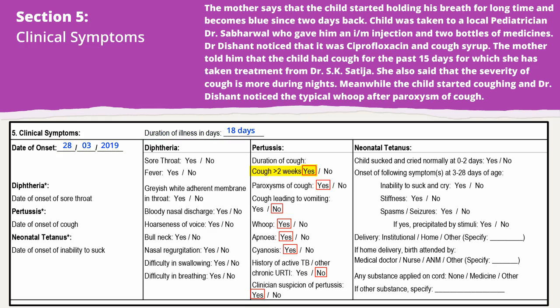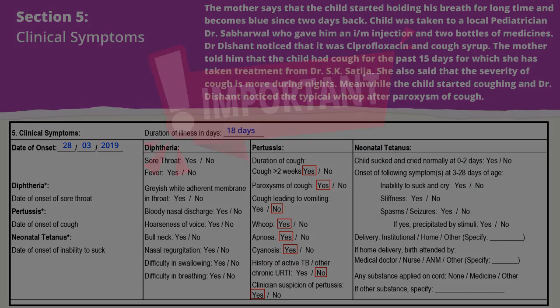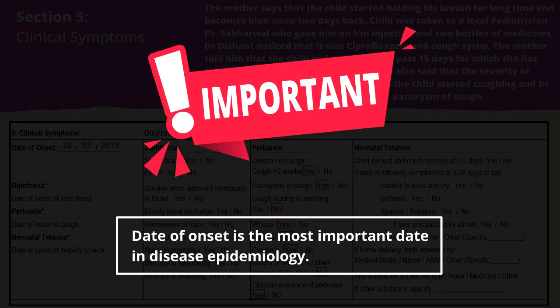Encircle yes for cough more than two weeks, paroxysm, whoop, apnea, and clinician suspicion of pertussis, and the rest as no. Similarly, in cases of diphtheria or neonatal tetanus, encircle the symptoms based on history. Always remember that the date of onset is the most important date in disease epidemiology and must be elicited correctly.